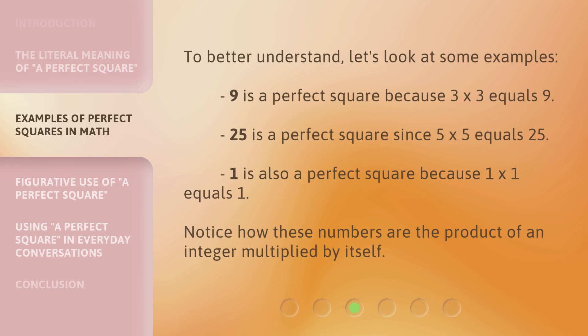To better understand, let's look at some examples. 9 is a perfect square because 3 times 3 equals 9. 25 is a perfect square since 5 times 5 equals 25. 1 is also a perfect square because 1 times 1 equals 1. Notice how these numbers are the product of an integer multiplied by itself.